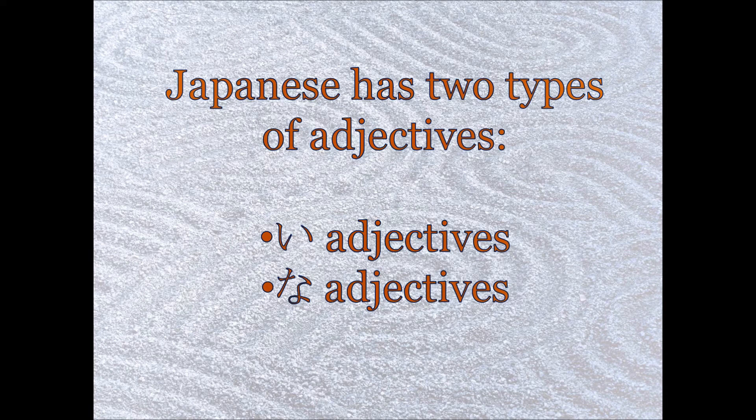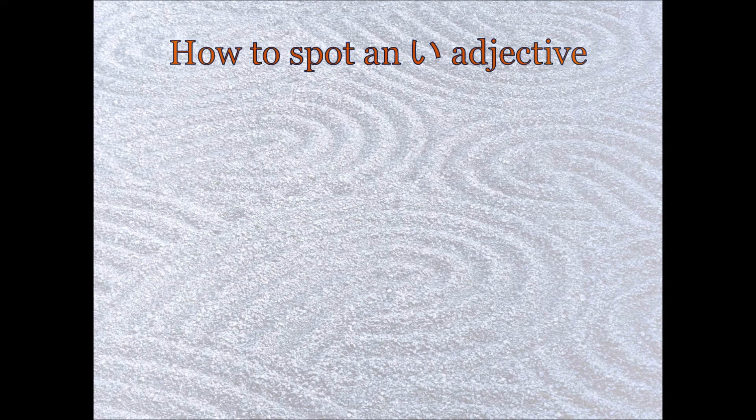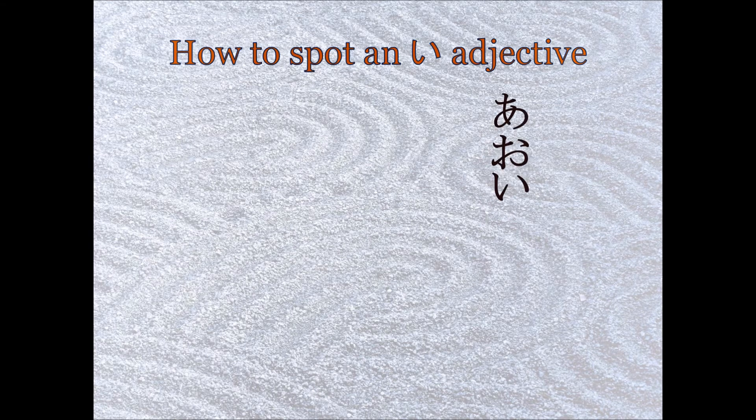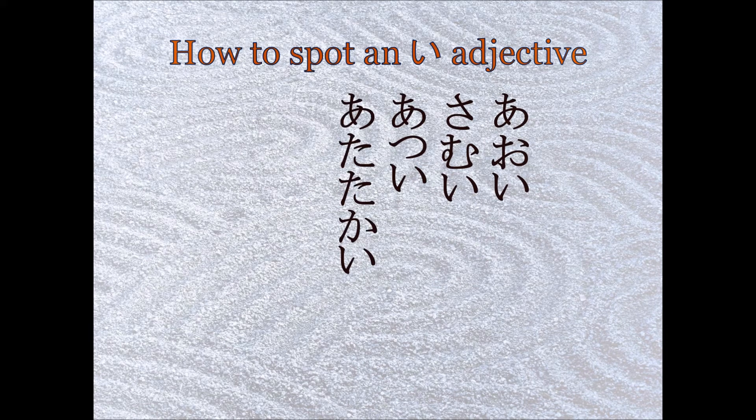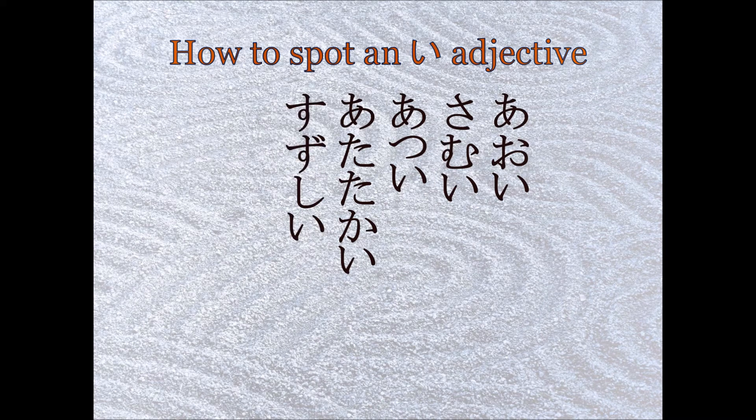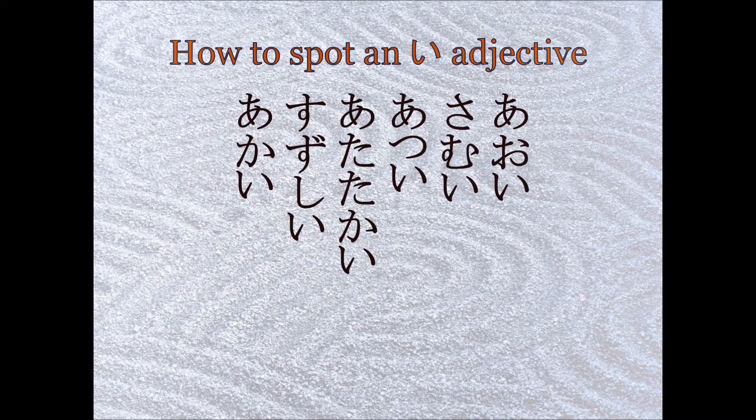Japanese have two types of adjectives. They have i-adjectives and na-adjectives. So to determine what an i-adjective is is not very difficult. As you can see, they all end with an i sound from right to left. Blue, cold, hot, warm, cool, and red. They all end with i. So they're i-adjectives.